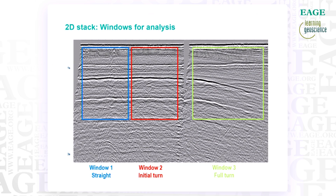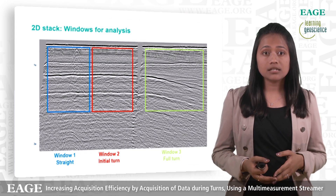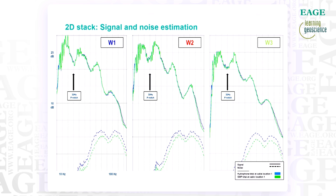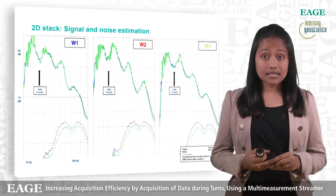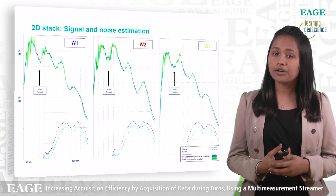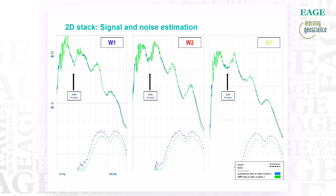We will now focus on some quantitative analysis. Three windows were selected in the shallow: one represents the straight, the second the initial turn, and one in the area of full turn. We then make our best estimate of the signal and noise separately and perform spectral analysis on this. The solid line represents the signal and the dashed line the noise floor. In this example, blue represents the hydrophone total wavefield for cable 1 and green the GMP total. If we have a good wavefield separation, we would expect a good match between the two curves. At this scale this appears to be the case; however, we need to examine the data more carefully to see if there is any deviation at all.